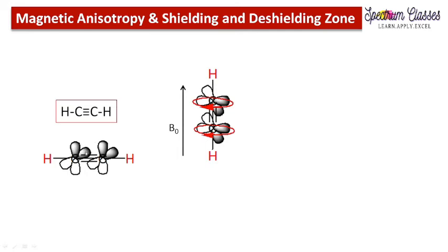Each carbon has two p orbitals, and circulation of electrons takes place on each carbon in this manner. In solution, all different molecular orientations are present — what we represent is the orientation of maximum contribution; those with lesser contribution are not shown. Here the applied external magnetic field is present and the circulation of electrons is perpendicular to B0, which is why this molecule adopts this orientation — it is the most effective one. Similarly, circulation of electrons occurs on the second carbon as well.